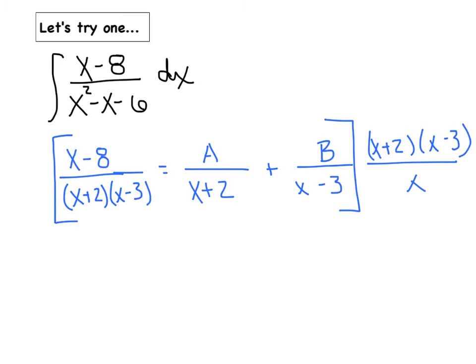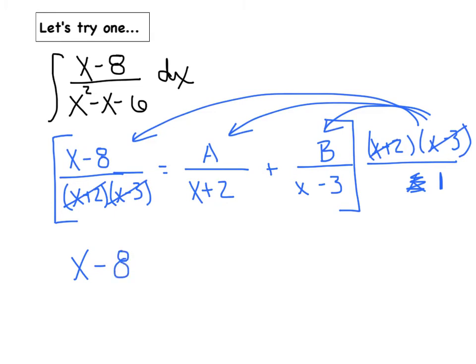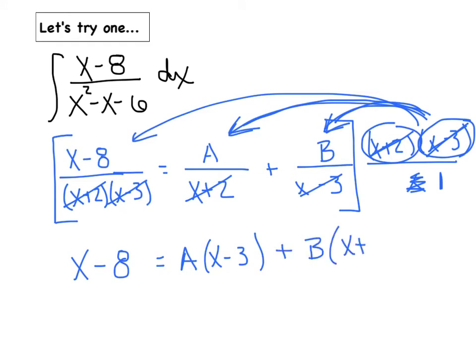We have distinct linear denominators, first denominator being X plus 2 and the second denominator being X minus 3. Because the denominators are a first degree function, my numerators are going to be constants. So basically I'm trying to solve this fractional equation. What I'm going to do is I'm going to distribute the common denominator through the entire equation. In this case, it was X plus 2 times X minus 3. I'm always going to put that over 1. As I distribute that to all three of these fractions, you'll notice on the first fraction, the denominators cancel out. And I get just X minus 8.